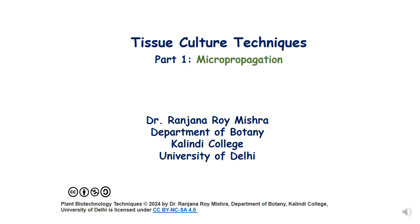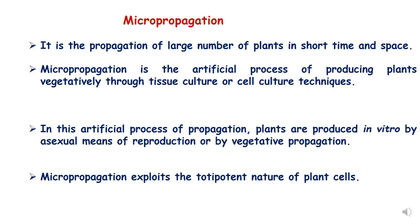Hello dear students, in this lecture we will be discussing briefly the tissue culture technique of micropropagation. Micropropagation is the artificial process of producing plants vegetatively through tissue culture or cell culture techniques. In this process, plants are produced in vitro by asexual means of reproduction or by vegetative propagation.